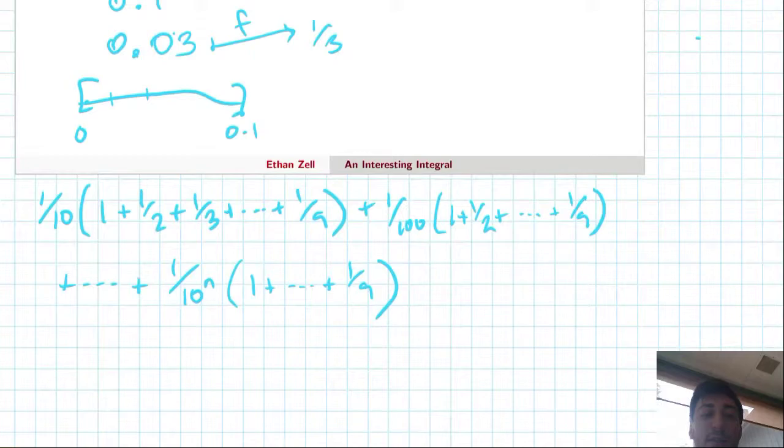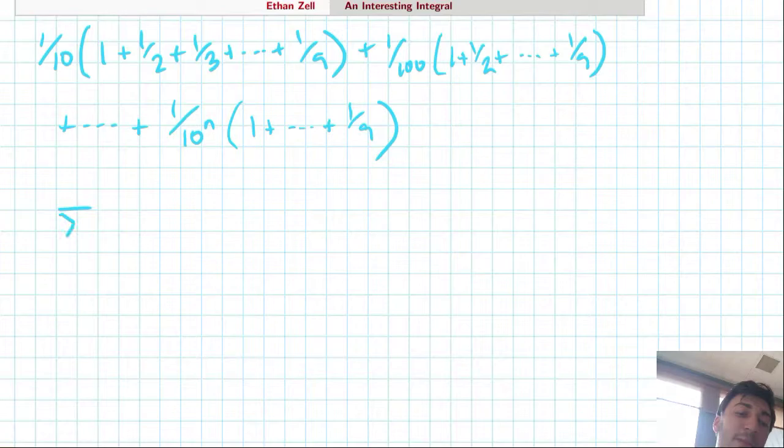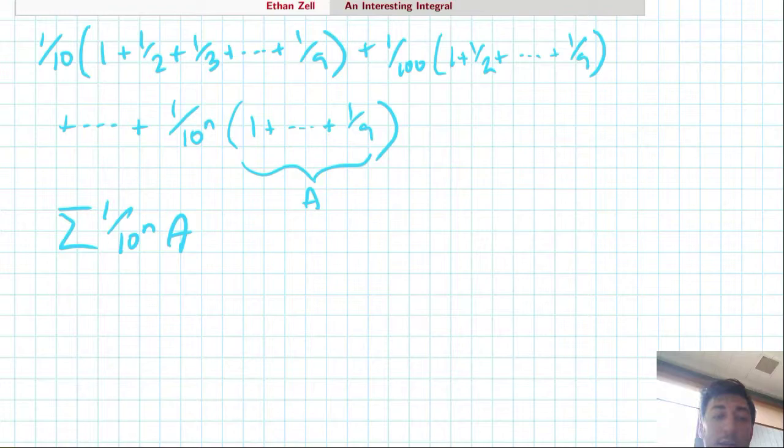Which is one over ten to the n times some quantity a, which I'll call this a. We want to take that infinitely many times from n equals one to infinity. But this is a solvable sum because this is just a geometric sum.